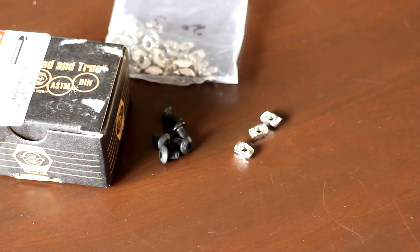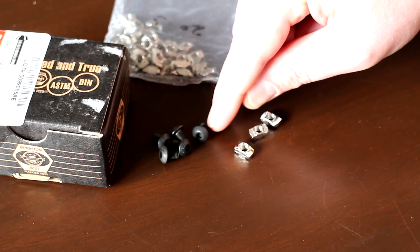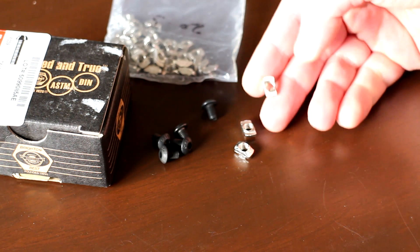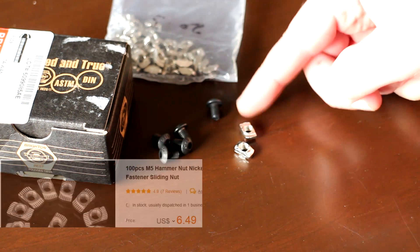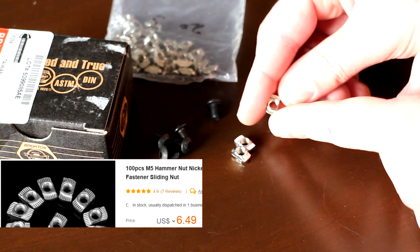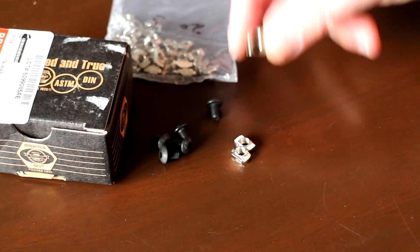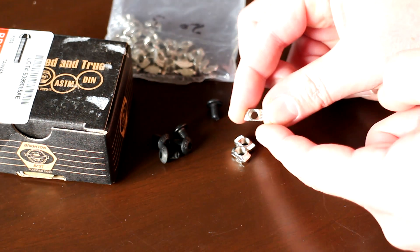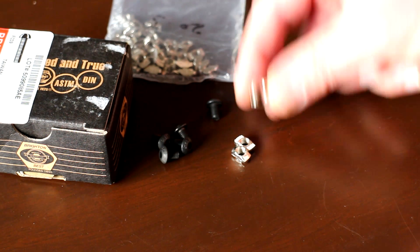To join those corner brackets to the aluminum frame, I'm using M5 button head screws with a length of 8mm and also M5 T-slot nuts. I bought these screws locally from the hardware store, but these T-slot nuts I've had to buy online. What I like about these T-slot nuts is normally the nuts are quite wide and you have to slide them all into the frame before assembling the frame. If you forget to put a nut in, you'll have to disassemble one part of the frame to slide more nuts in.